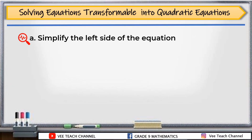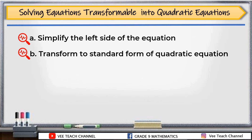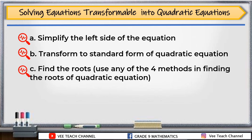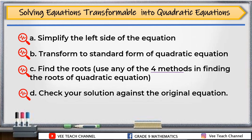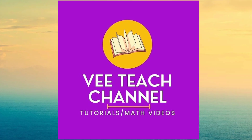Let's recap all the steps. First, simplify the left side of the equation. Second, transform to standard form of a quadratic equation. Third, find the roots using any of the four methods: completing the square, factoring, the quadratic formula, or extracting roots. And last, always check your solution against the original equation to make sure you got it correctly.